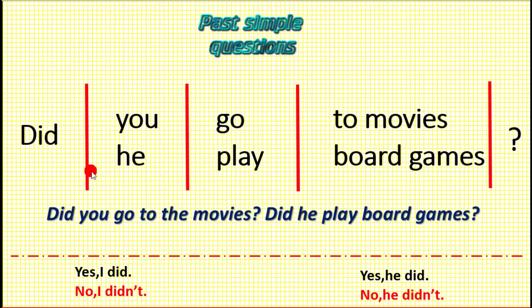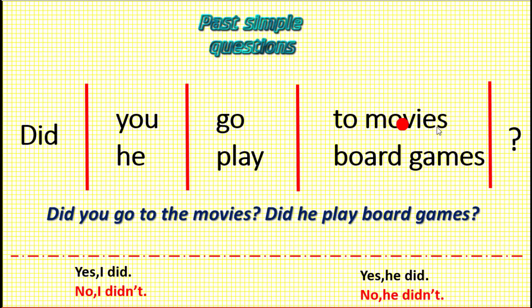Luego 'he', que significa él. Después del sujeto viene el verbo — ponemos 'go' or 'play'. Y tenemos el complemento: 'to the movies' quiere decir al cine, y 'board games' quiere decir juego de mesa. Entonces si uno las junta, las preguntas serían: 'Did you go to the movies?' — ¿Te fuiste al cine? — and 'Did he play board games?' — ¿Él jugó juego de mesa? Nota que todas empiezan con 'did'. Así se hacen las preguntas en inglés.